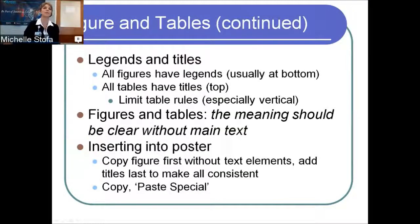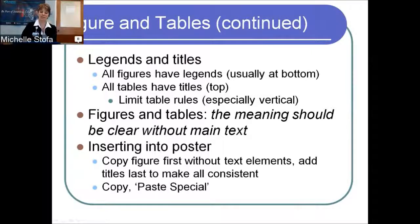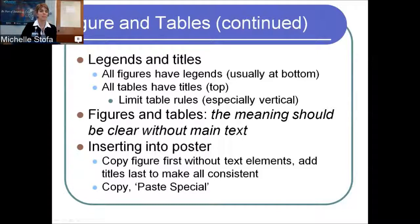A few more points about figures and tables: all figures have legends at the bottom, all tables have titles at the top. For tables, limit your rules — especially avoid vertical rules, otherwise it looks like a big grid. Your figures and tables should be understandable on their own without hunting through the text, so if there's an abbreviation on a table, put it in the legend. The easiest way to insert tables is to copy the figure first without text elements, then paste special as a snapshot, and add labels or titles for all figures at the end so they're all the same size.